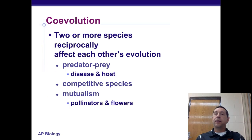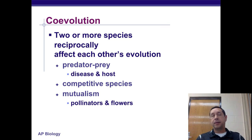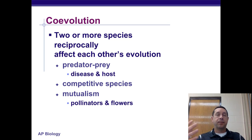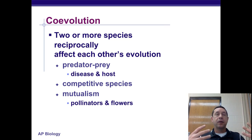Co-evolution is when two or more species affect one another's evolution. Predator-prey relationships, disease and host relationships, competitive species, and mutualistic relationships are all examples of where co-evolution can occur.